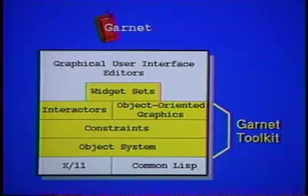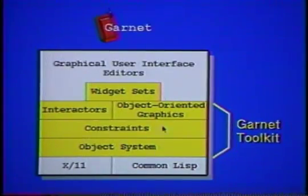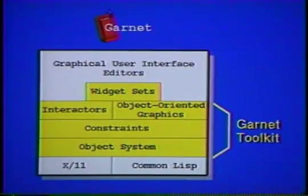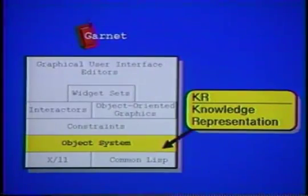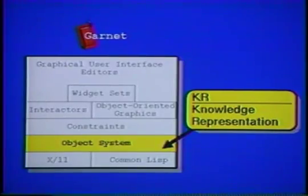Garnet is a comprehensive system and contains both a low-level toolkit and high-level interactive tools, with innovations at every level. The Garnet Toolkit contains an object system, constraints, new input and output models and widgets.